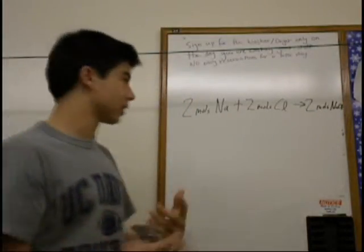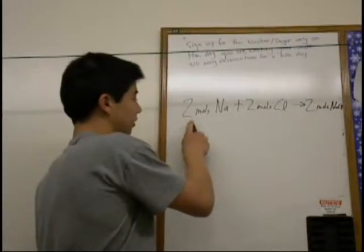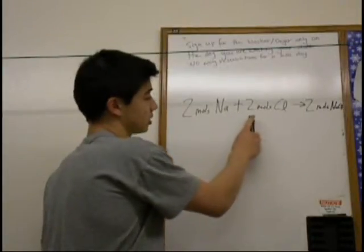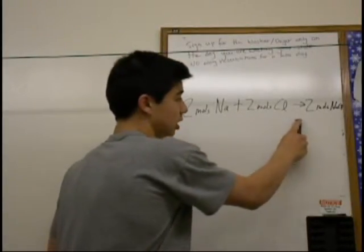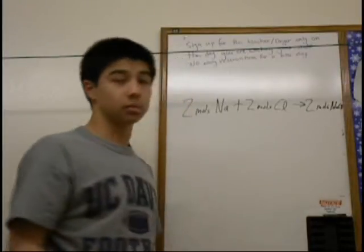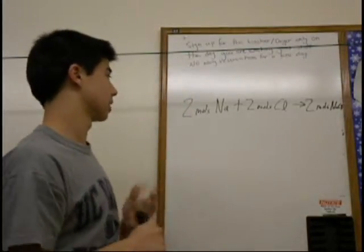An example, or a way to think of this is if you have two moles of boys plus two moles of girls equals two moles of couples. That's just another way of looking at it.